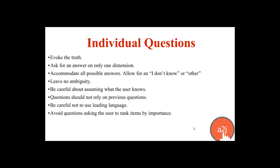Finally, thinking about the individual questions themselves — tips from an advanced author: you should seek to evoke the truth, ask for an answer on only one dimension, and accommodate for all possible answers. Allow for an 'I don't know' or an 'other' — there are many cases where those are appropriate responses. Be careful about assuming what a user knows, and questions shouldn't rely on previous questions. If they do, you should use things built into A to J called macros — which we'll talk about in video three — to recall information already given.